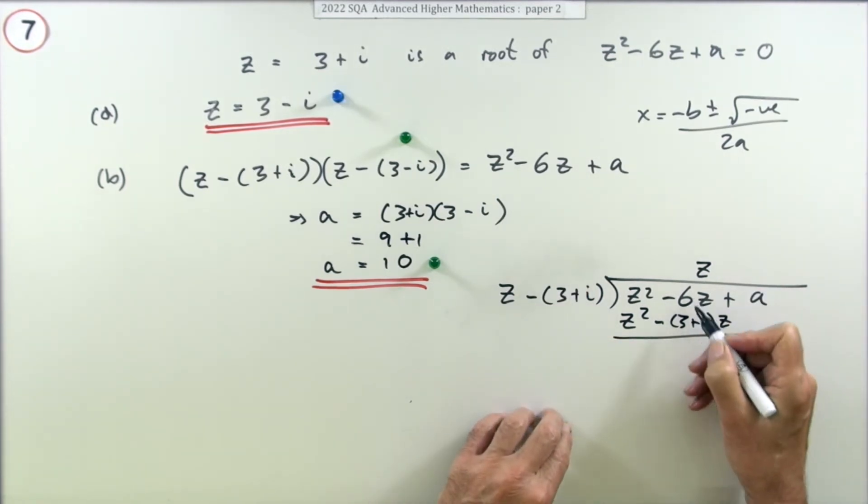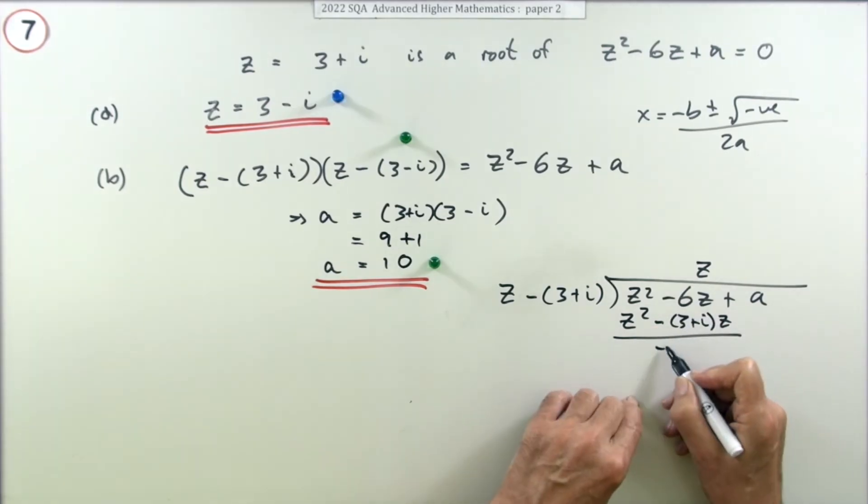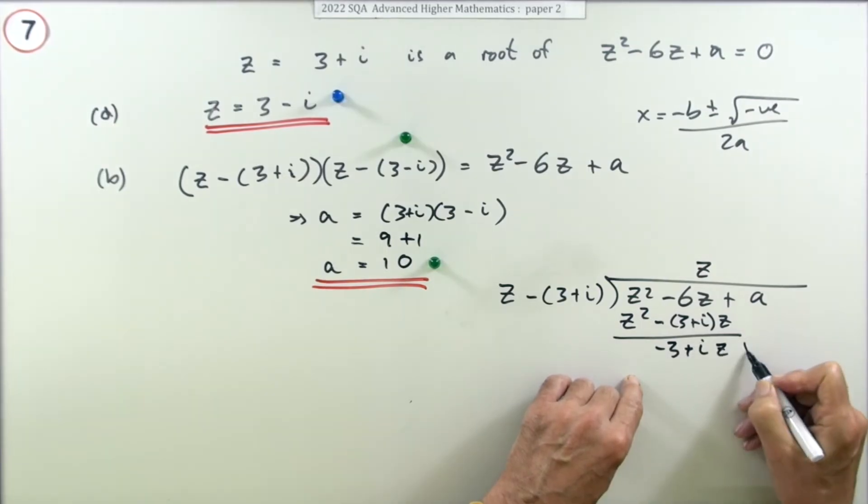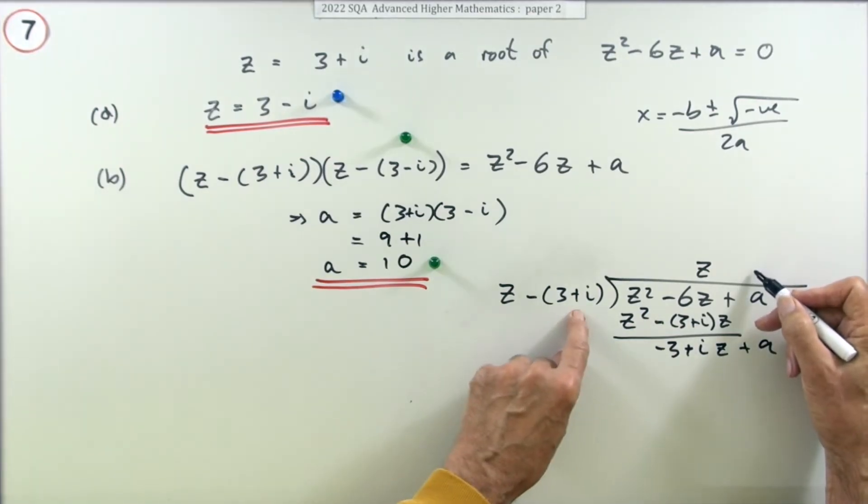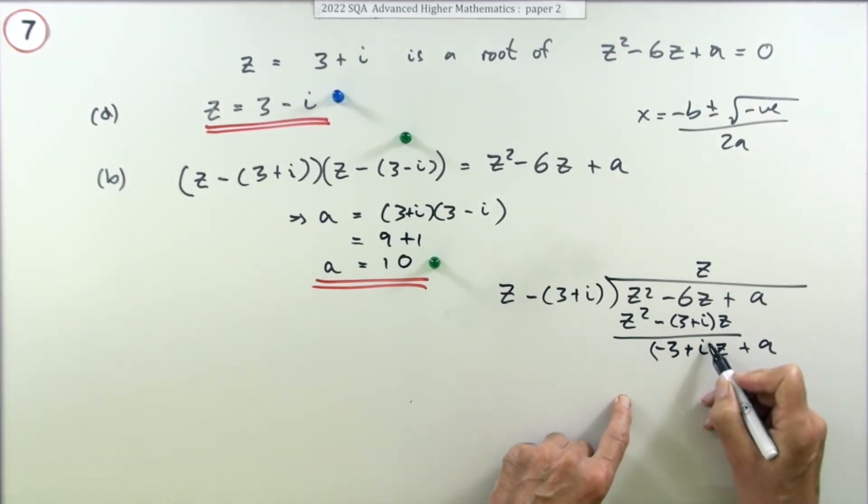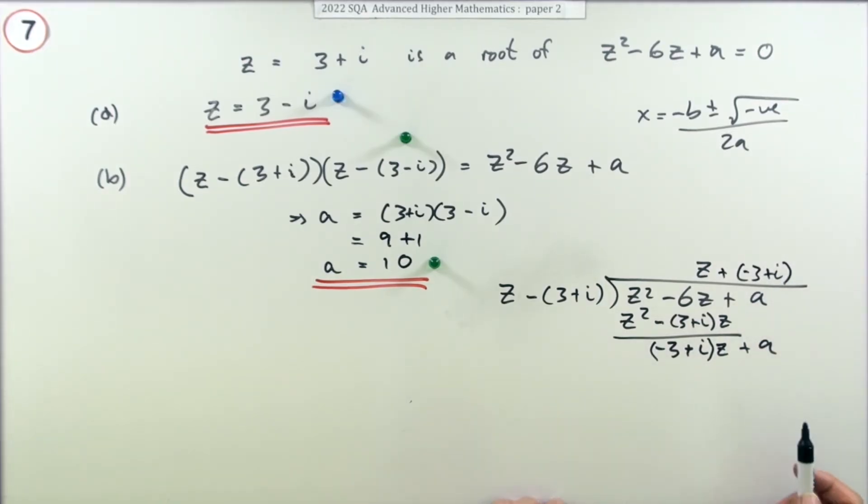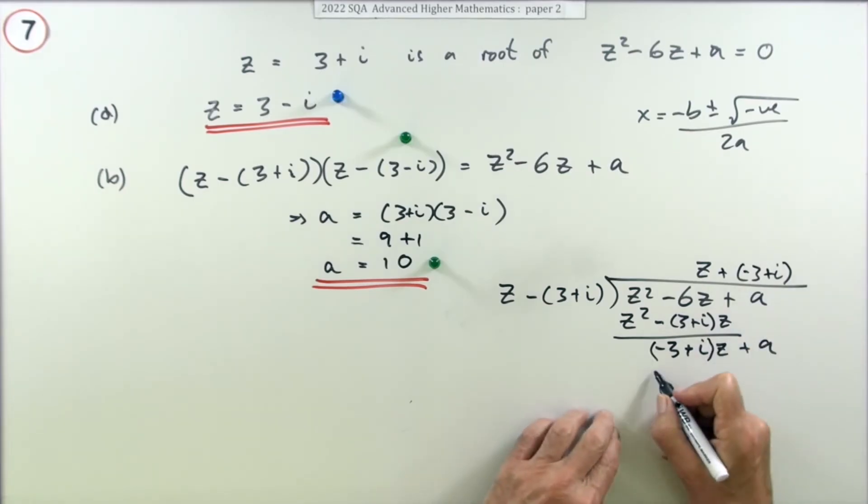Subtract, so it's negative 6 plus that, so it'll be negative 6 plus 3, which is negative 3, and then plus i. Now this part I'd have to multiply this by this here. I should maybe put that in a little bracket, by this, so z plus negative 3 plus i. Now notice that part there, if you take that negative out, that z minus, and that'll be 3 minus i, which is of course the other one.